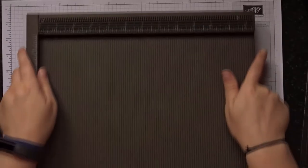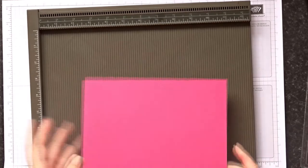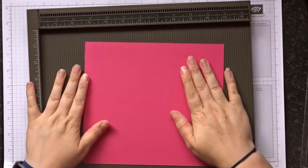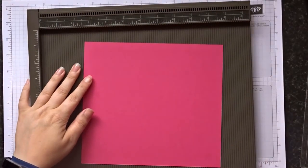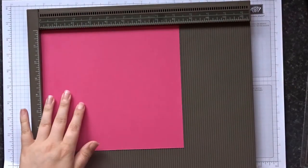So you're going to need your scoreboard, mine's in inches, and then you're going to need a piece of cardstock. This is Melon Mambo which is a gorgeous color, and this is seven and a half by eight and a quarter.